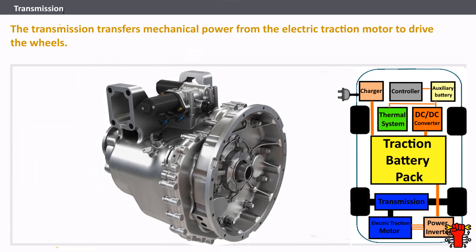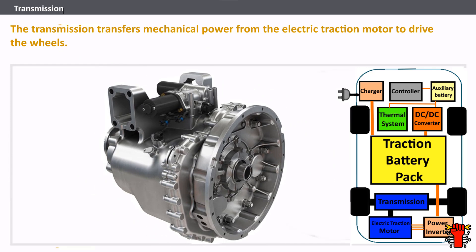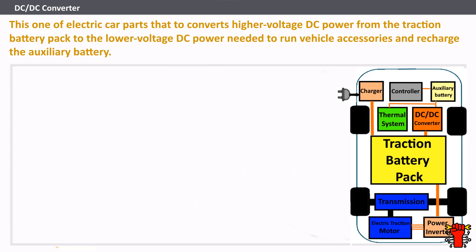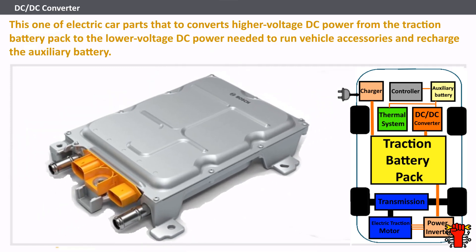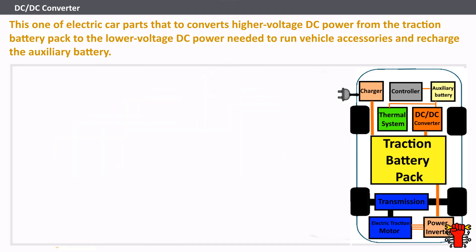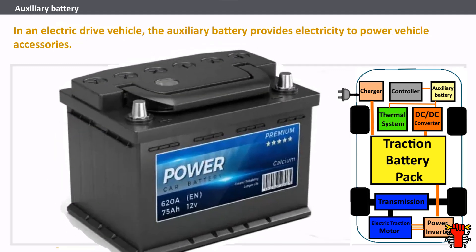The transmission transfers mechanical power from the electric traction motor to drive the wheels. The DC-DC converter is the electric car part that converts higher-voltage DC power from the traction battery pack to the lower-voltage DC power needed to run vehicle accessories and recharge the auxiliary battery.